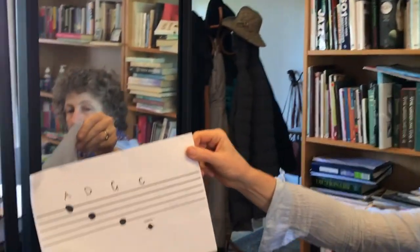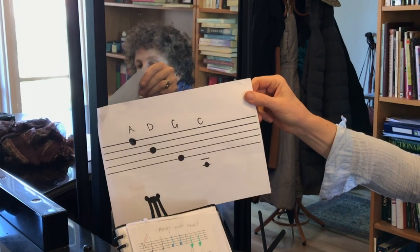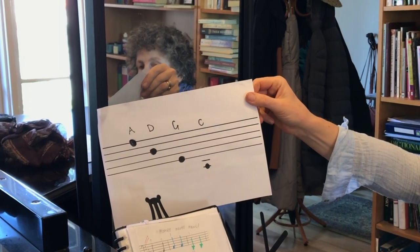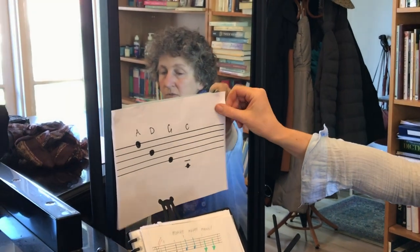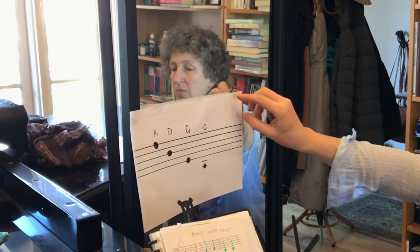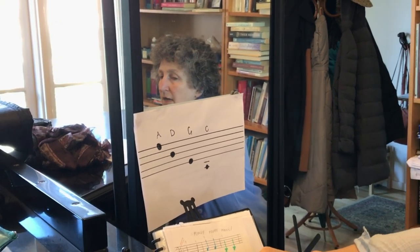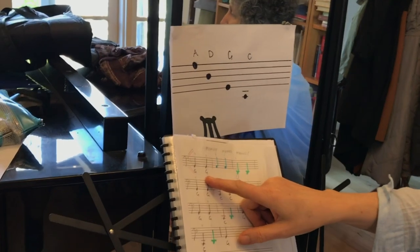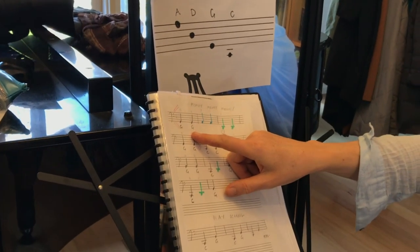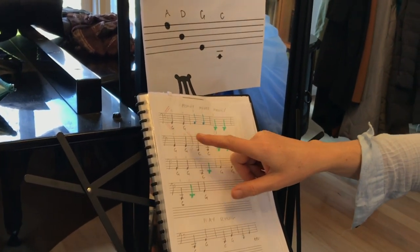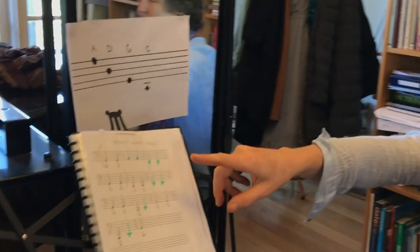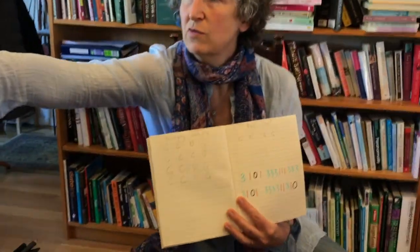So now we have our notes on the musical stave, but we've also got the letter names written underneath as a kind of backstop. Pretty soon we won't need the letter names, because you will have learned just to read the notes on the stave.